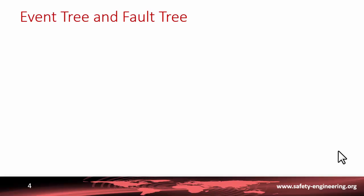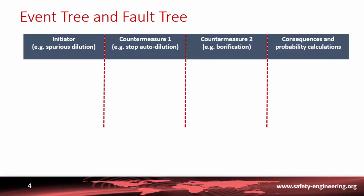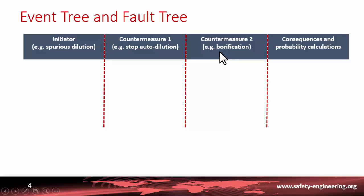The purpose of these trees is to determine the probability of consequences on the fuel or on the core. Starting from an initiating event — in this example, a spurious dilution, which is a reduction of the concentration of boron in the reactor core — there will be a first counter-measure such as the automatic stoppage of this dilution. If this is not efficient, a second line of defense occurs with the initiation of a borification system that will inject boron directly into the core. Depending on the probability of failure or success of these two counter-measures, we can calculate the consequences.